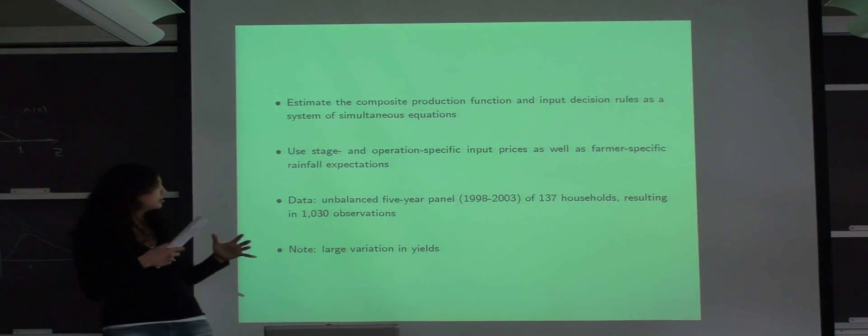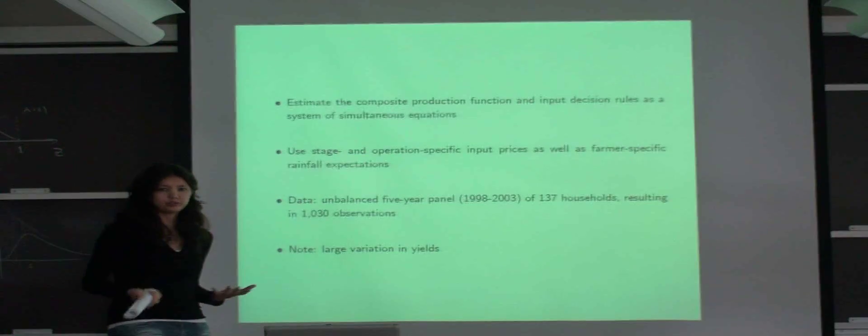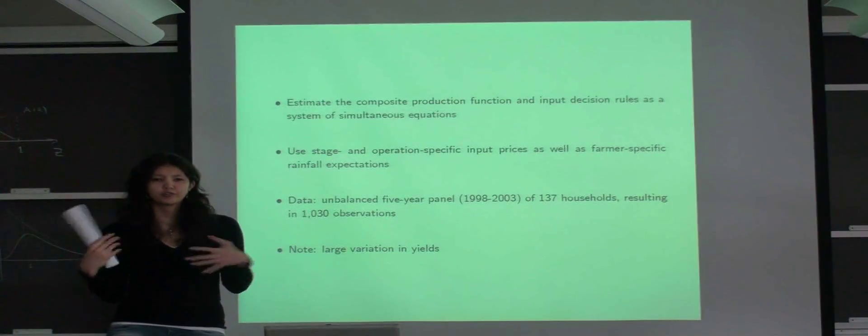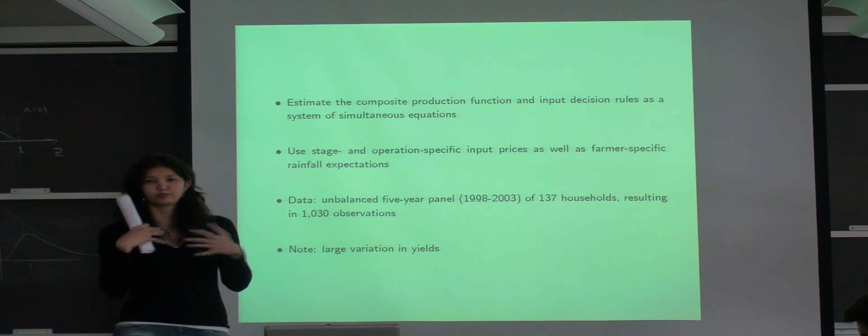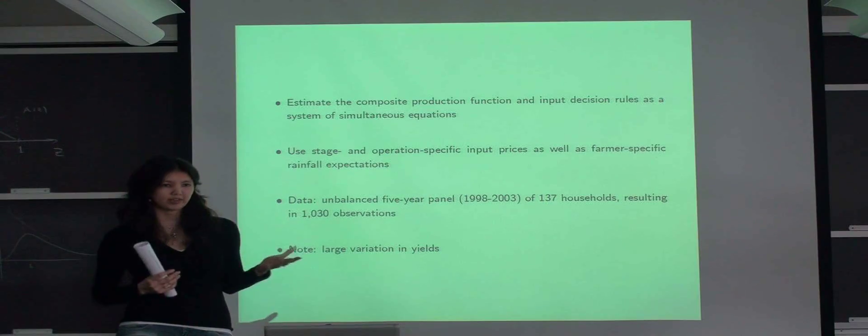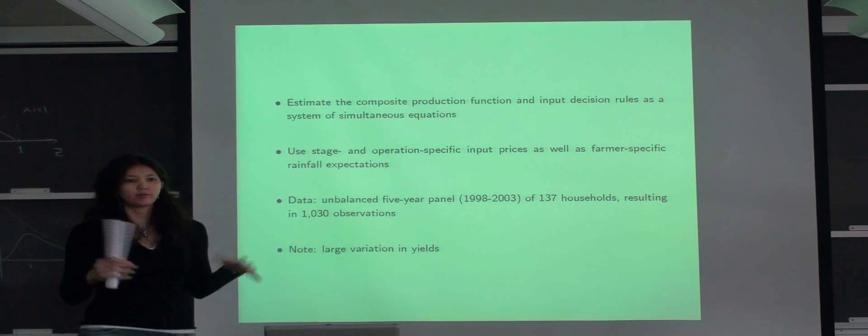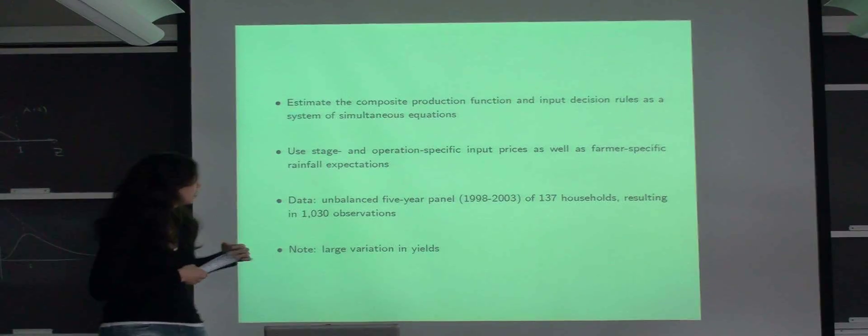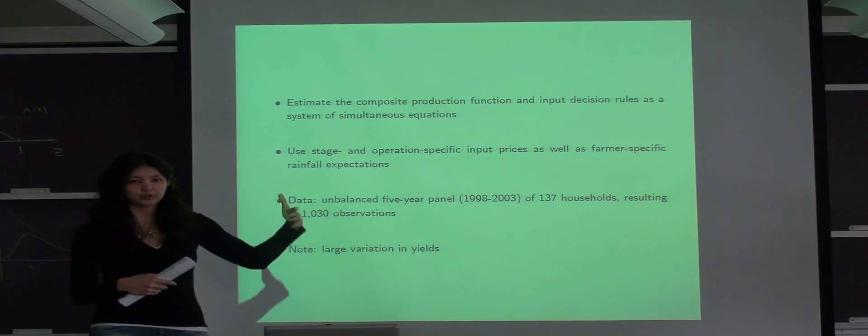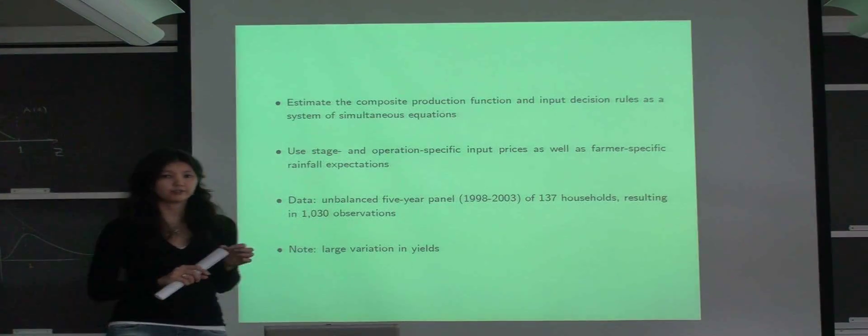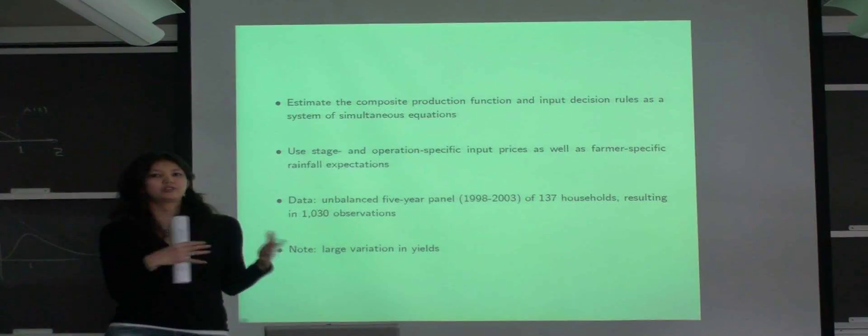In our estimation, we use stage and operation specific input prices as instruments. And why can we do that? In Thailand, there's a lot of regional migration going on, in particular of a circular or seasonal type. It goes both rural-rural and rural-urban ways, and in each case it goes either direction. So because of that, labor markets are determined not on village level, but on a much larger regional level. We also use farmer-specific rainfall expectations. They are plot-specific, meaning we take into account the fact that farmers at different plots perform the same operation during different times. For example, some farmer may start planting in May, another farmer may start planting in June.